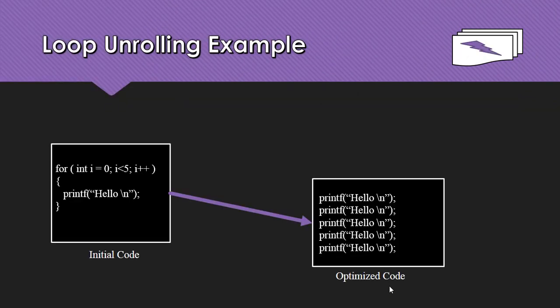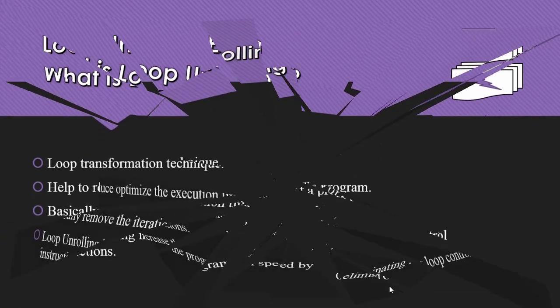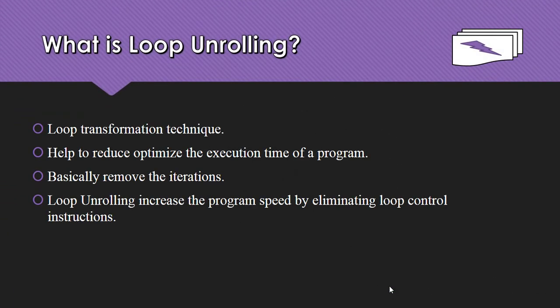These are the loop optimization techniques used to optimize source code in order to increase execution speed. That's all about code optimization and loop optimization. In the notes I've asked some questions — please answer them, and if you have any questions please comment below.